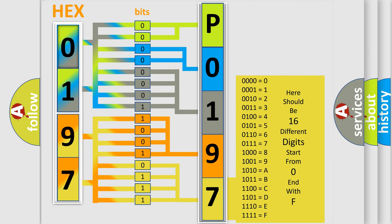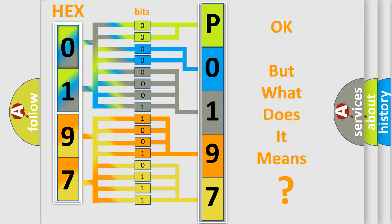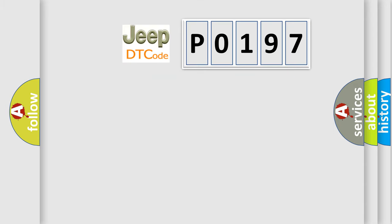We now know in what way the diagnostic tool translates the received information into a more comprehensible format. The number itself does not make sense to us if we cannot assign information about what it actually expresses. So, what does the diagnostic trouble code P0197 interpret specifically for Jeep car manufacturers?